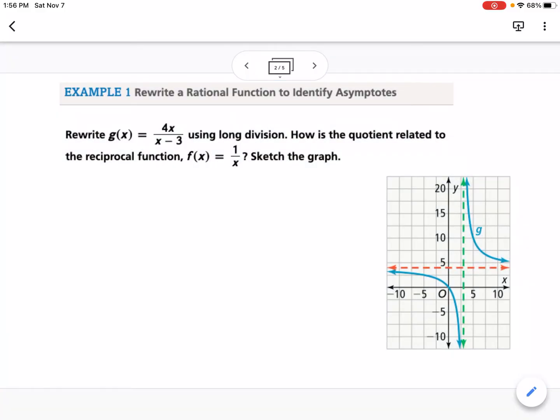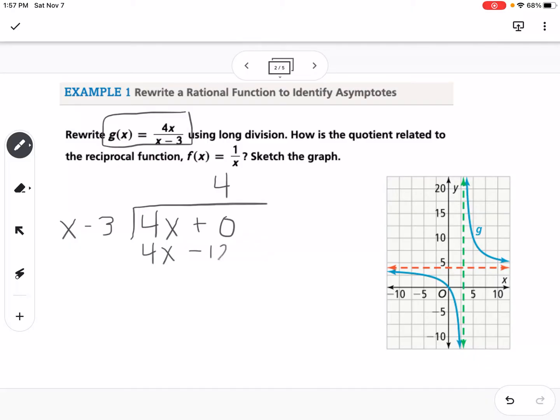Example one is to rewrite a rational function to identify asymptotes. We're rewriting g(x) equals 4x divided by x minus 3 using long division. So 4x divided by x minus 3, and I'm going to put a plus 0 for placeholders. X times what gives me 4x? That's 4. 4 times x is 4x, 4 times negative 3 is negative 12. We're subtracting, so that becomes positive 12. The remainder is 12 over x minus 3.